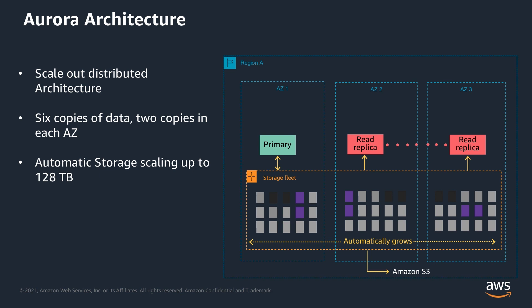The cluster storage volume automatically grows as the amount of data in your database increases, so you don't need to worry about provisioning. Aurora cluster storage volume can grow up to 128 terabytes. The data is continuously backed up to S3, which is designed to provide eleven nines of durability.